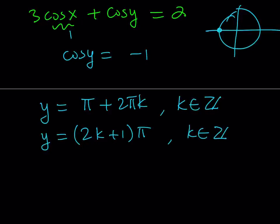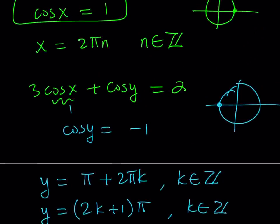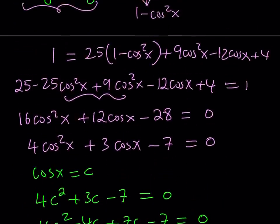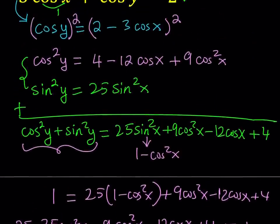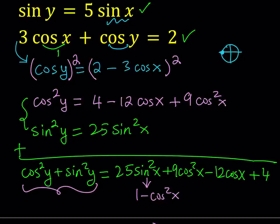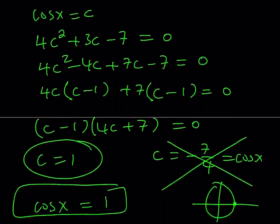We can test x equals 0 and y equals π. If x equals 0, then sine of 0 is 0 on the right-hand side, and sine of y equals 0 as well — which is true because sine π equals 0. And we know cosine x equals 1, and we got the cosine y value directly by substitution, not squaring. So both of our solutions are valid.